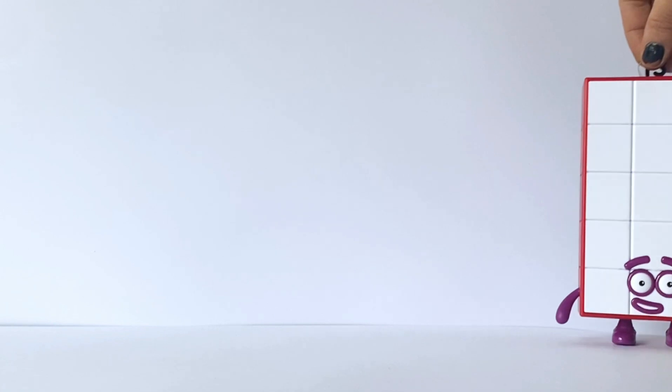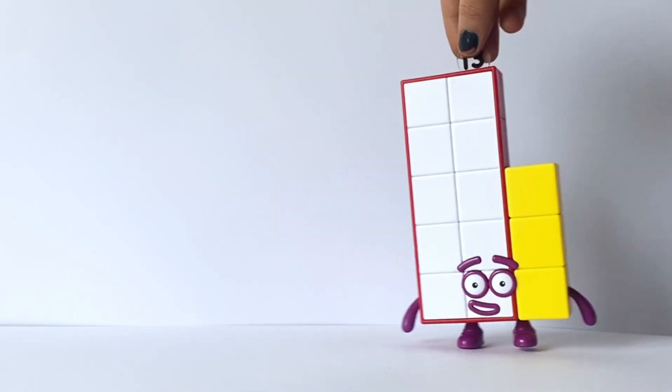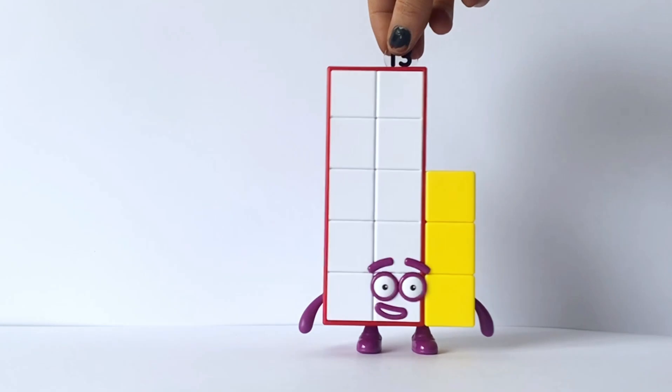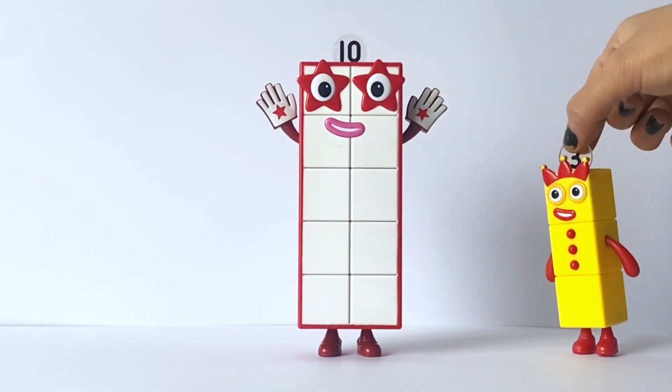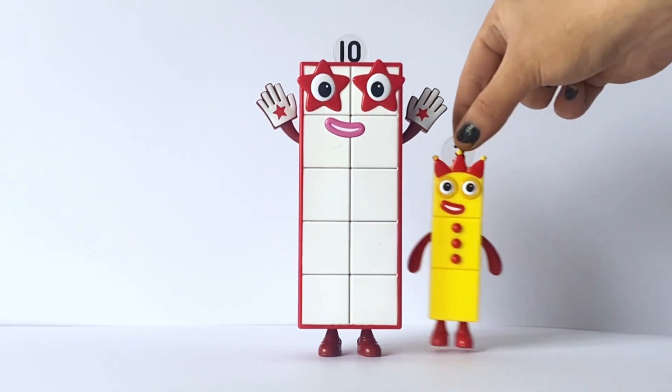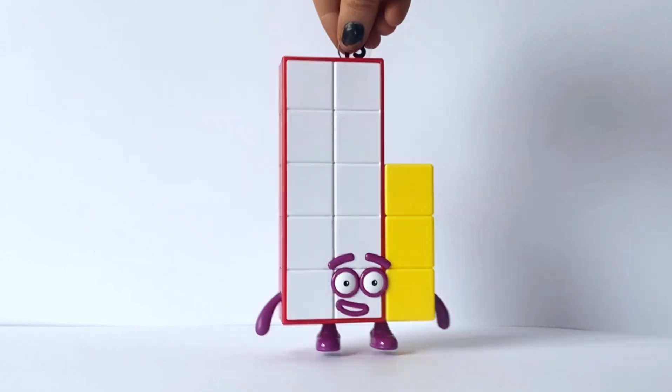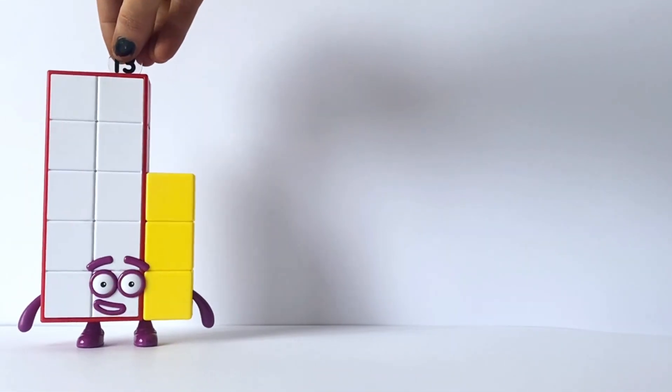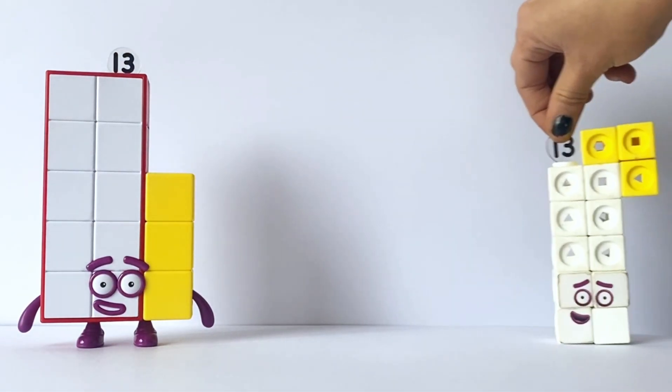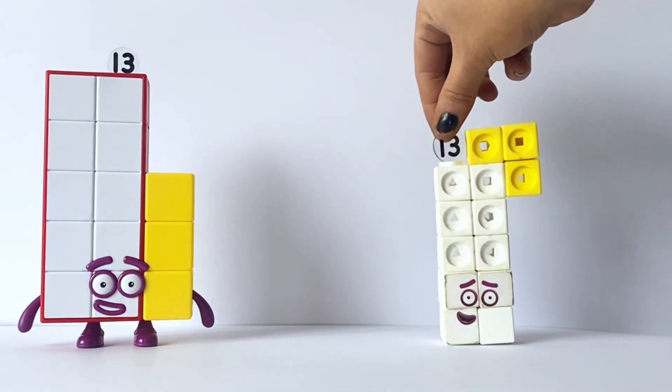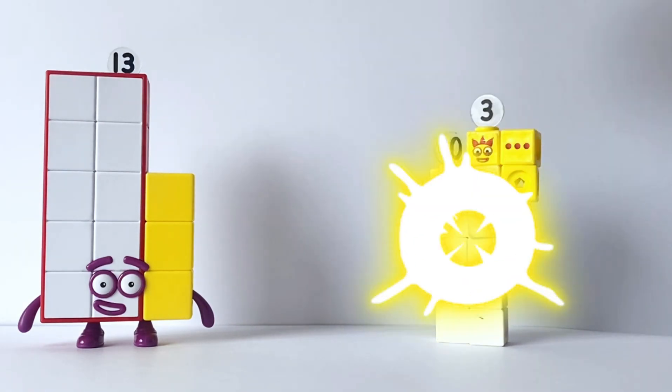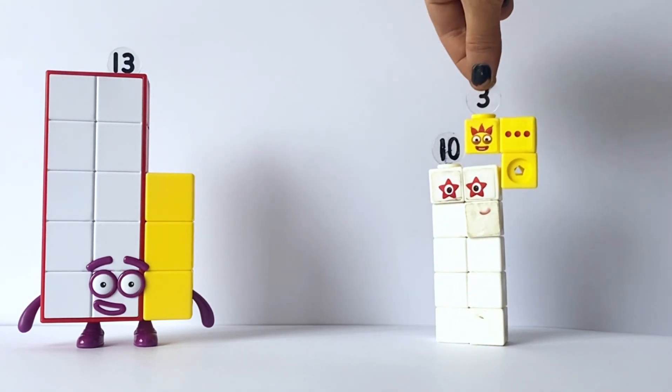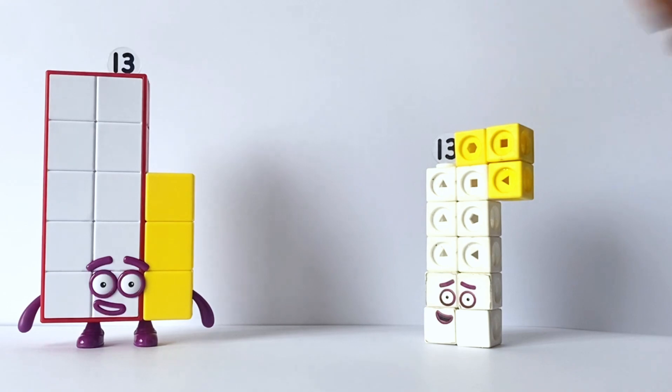Next we have NumberBlock 13. NumberBlock 13 has 10 white blocks and 3 yellow blocks. Don't say NumberBlock 13's name. NumberBlock 13 is a 10 and a 3. And here is NumberBlock 13 as a Mathlink cube. NumberBlock 13 is usually presented with the 3 on top like this. A 10 and a 3 is 13.